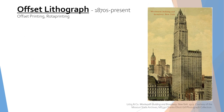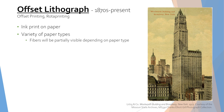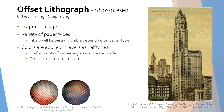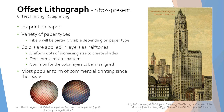Offset lithography was invented in the late 1870s and worked by transferring an ink print from a metal or rubber roller onto paper. They can be printed on a variety of paper types, from uncoated matte papers to glossy coated papers, meaning the paper fibers may be partially visible depending on the paper type used. The colors are applied in separate layers in halftones, which creates a uniform pattern of dots of increasing size to create shades. It is common for these halftones to create a rosette pattern when applied on top of each other. Since the colors are applied in separate layers, it is common for them to be misaligned. Offset lithography became the most popular form of commercial printing during the 1950s.